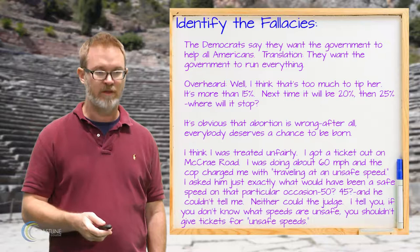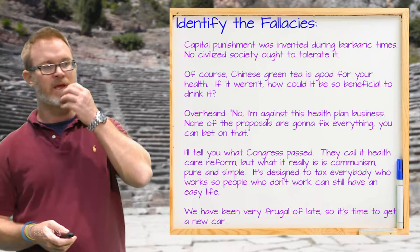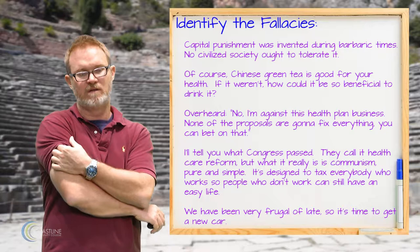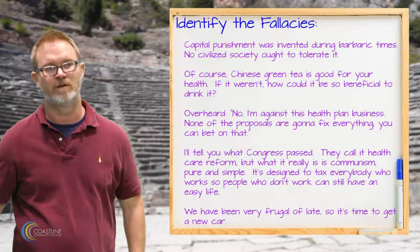The next one says: capital punishment was invented during barbaric times — no civilized society ought to tolerate it. This is an example of the genetic fallacy — it's trying to refute capital punishment based upon its origin.